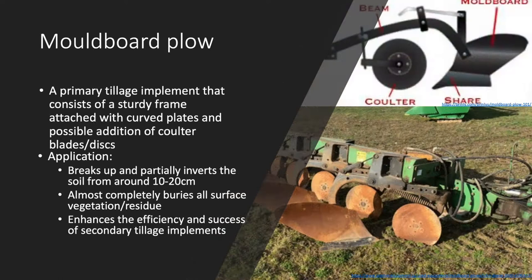The moldboard plow is a primary tillage implement that consists of a sturdy frame attached with curved plates and the possible addition of coulter blades or discs. This implement is typically used to break up and partially invert soil from around 10-20 cm. This action of inverting the soil results in almost complete burial of surface residue. Primary loosening of the soil also helps to enhance the efficiency and success of secondary tillage implements.